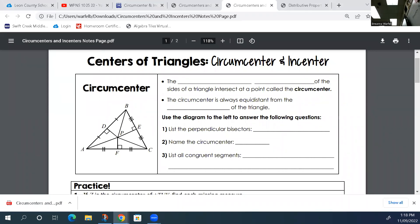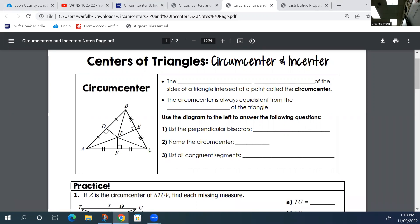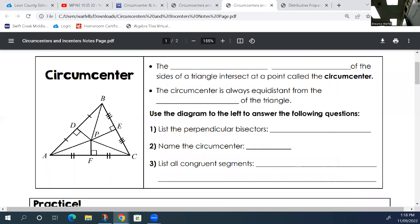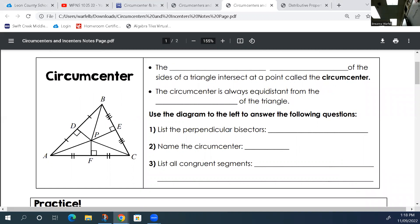Your first topic is on the circumcenter and the incenter. These things are different types of lines that are created, and it's where they intersect. The first one is the circumcenter, and your notes are filled in. The circumcenter is created by perpendicular bisectors. You look at every side, and what happens is you split it at a right angle, which creates the perpendicular part.